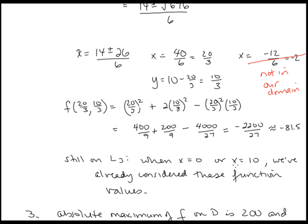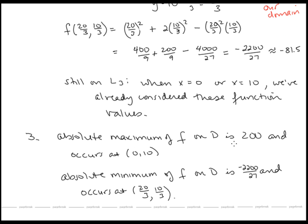Having checked the entire boundary and all interior critical points, the absolute maximum of f on this domain is 200, occurring at (0, 10). The absolute minimum is −2200/27, occurring at (20/3, 10/3).